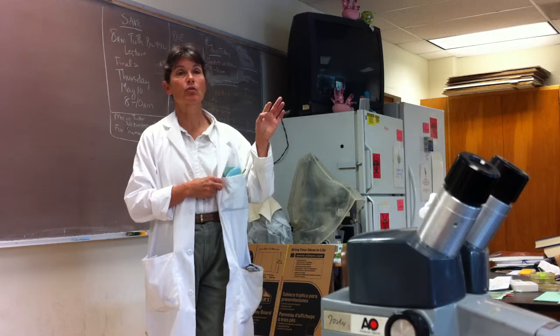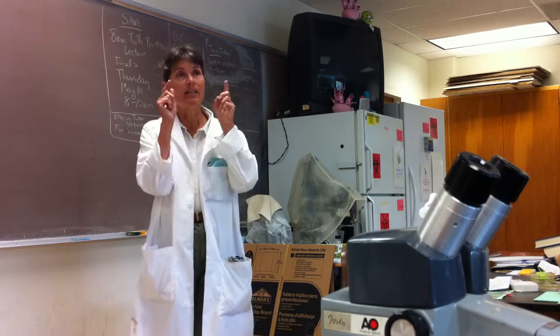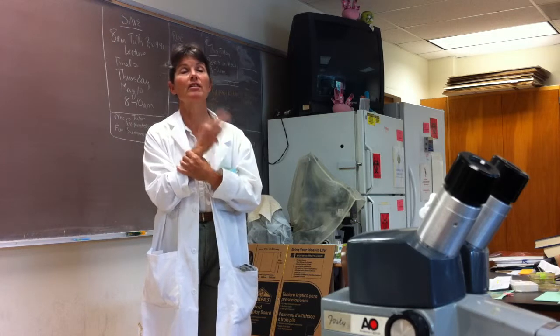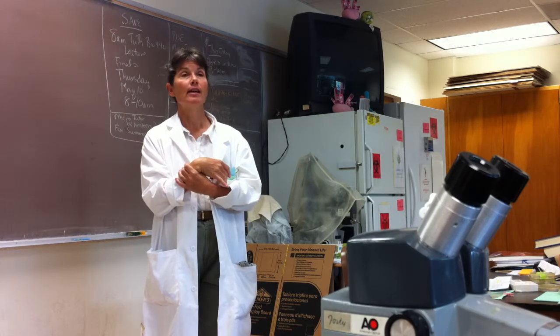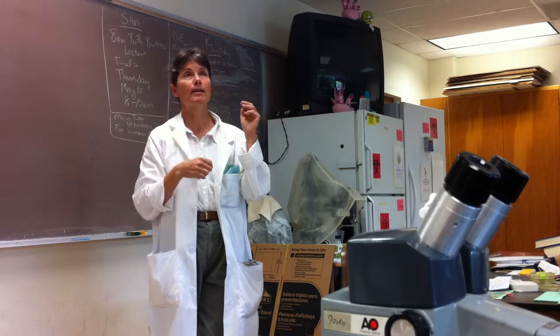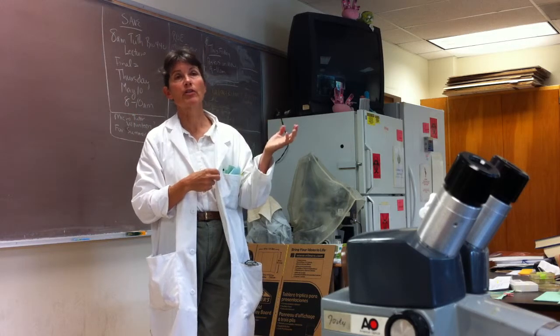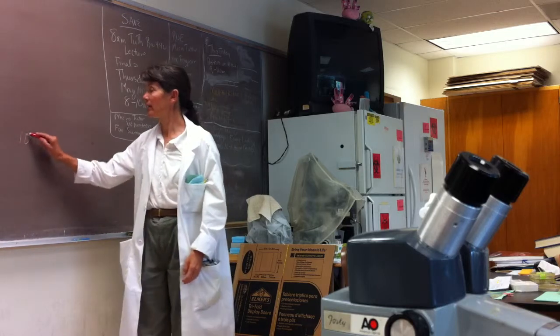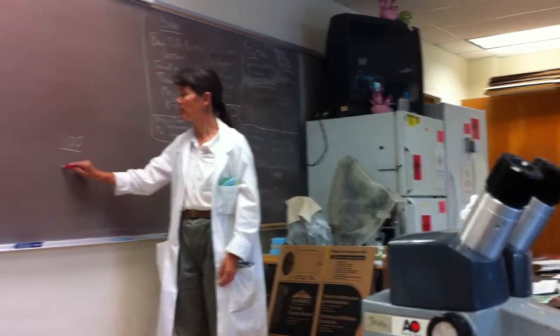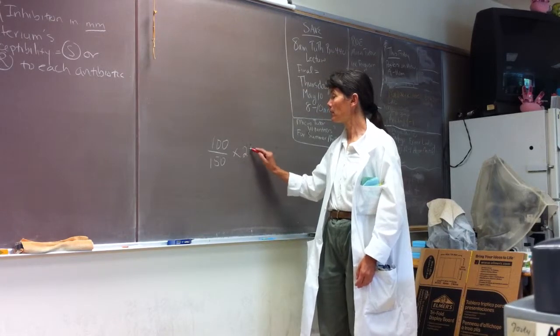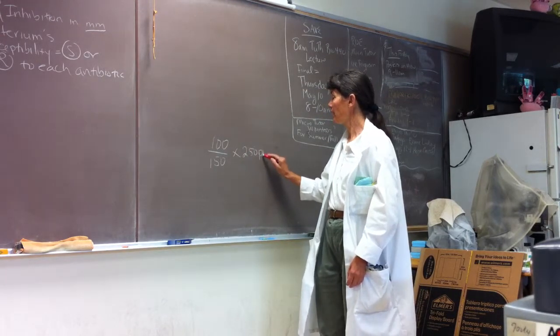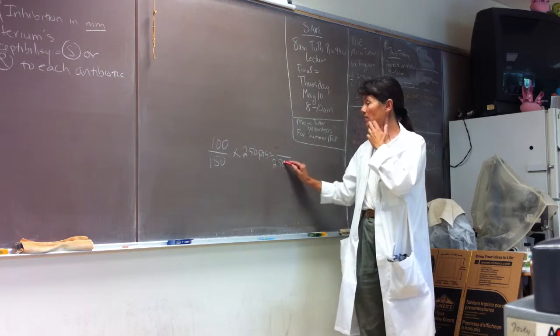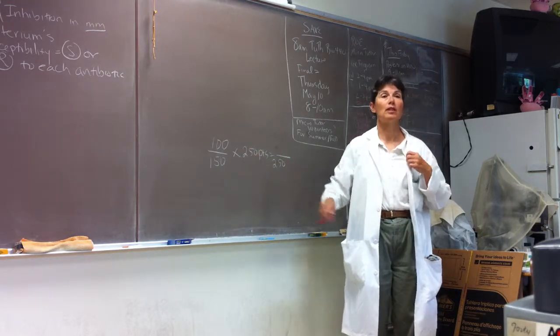What I do is I take your raw score. Each question on the final is worth one raw point. So let's say there's 150 questions, and let's say that you get 100 questions right out of 150. What I would do is I would take 100 questions right out of 150 and then I multiply it by 250 points. And then that's what goes into the grade book, how many points out of 250 that you got.